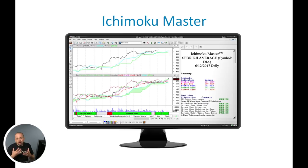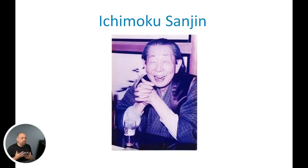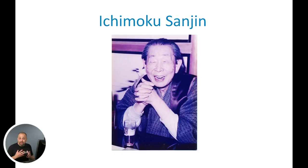Ichimoku was created by a man by the name of Goicho Hasada. He actually ended up going by the name of Ichimoku Sanjin. If you know anything about Japanese, Ichimoku Sanjin can actually be translated to 'what a man in the mountain sees.' It's a methodology he started and created back in the 1930s. He worked on it for about 30 years, and in the 1960s he released to the public the Ichimoku Kinko Hyo indicator.